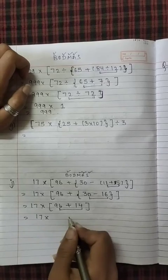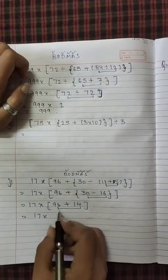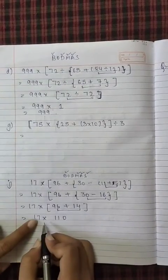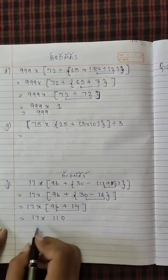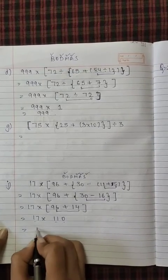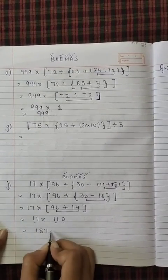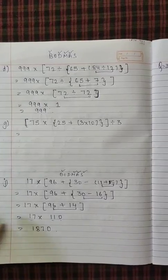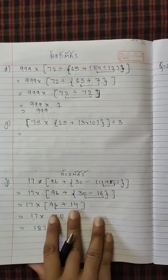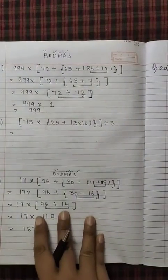Our curly bracket is done. Next is square bracket. So 17 into 96 plus 14 is what? 110. Next, what is left? Multiplication. Then 17 into 11 is 187 and one zero at the end, and this is your answer. So it is easy. Next, rest part you will do on your own.